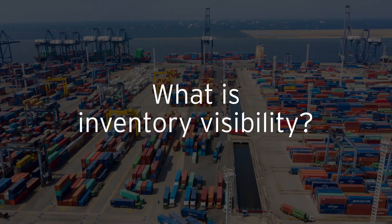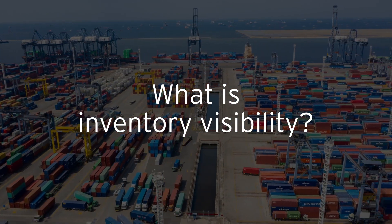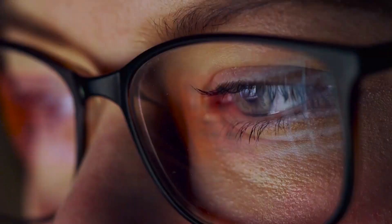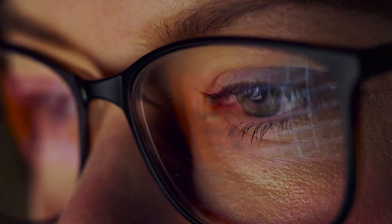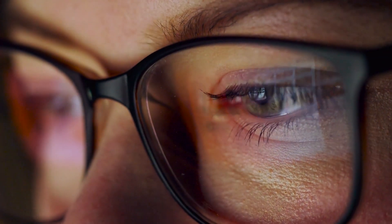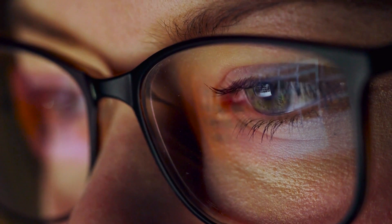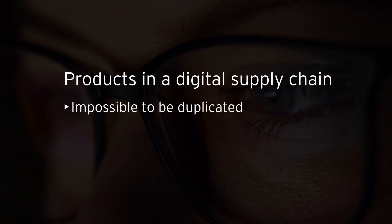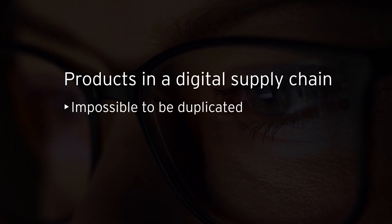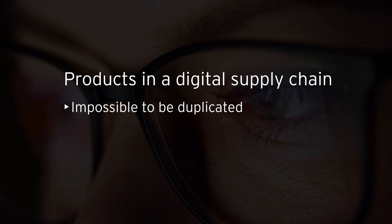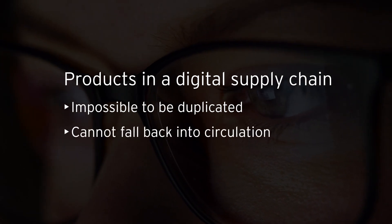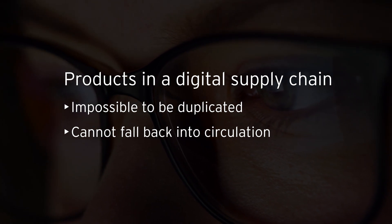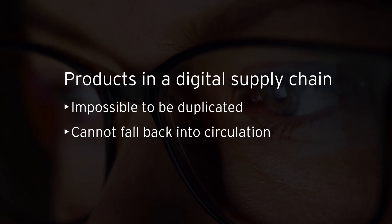Inventory is a count of our products — how much we have and where they are located. Products are both scarce and consumable. To track products in a digital supply chain, we need a system that reflects those qualities: one where it is impossible for a product to be in two places at once, and two, once a product is used, it cannot fall back into circulation. We need a system that can ensure digital scarcity.